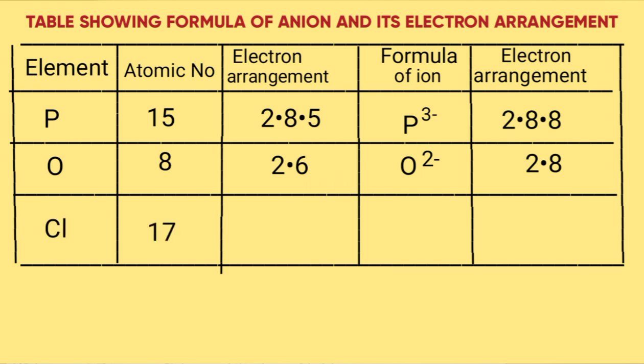Chlorine, atomic number 17, has a configuration of 2.8.7. Gains one electron, becomes Cl^- and its configuration is 2.8.8.